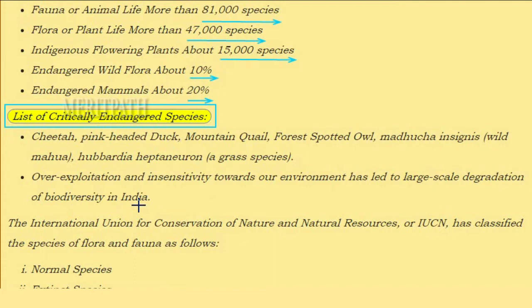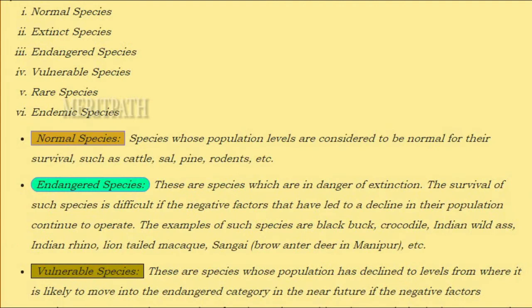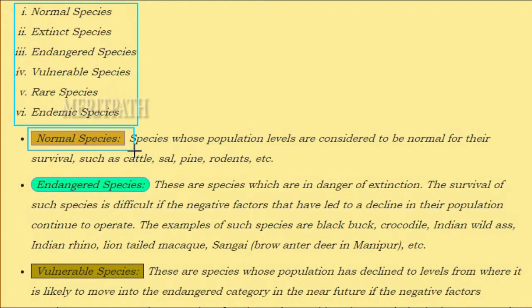The International Union for Conservation of Nature and Natural Resources (IUCN) has classified species of flora and fauna into the following categories: normal species, extinct species, endangered species, vulnerable species, rare species, and endemic species.